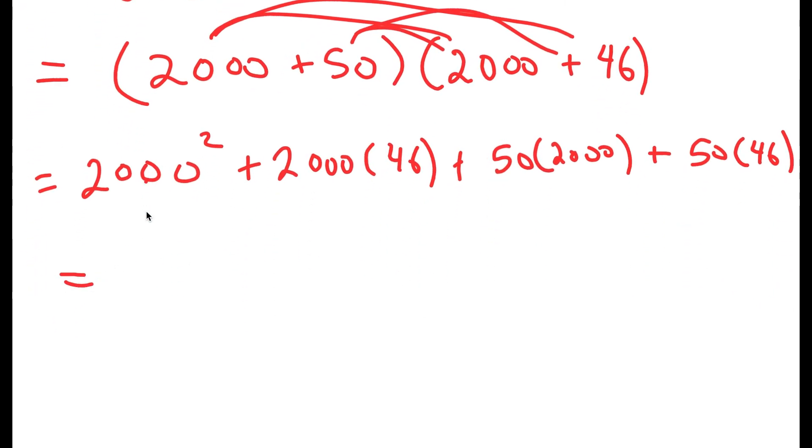Now, 2000 squared is equal to 4 million. So I get 4 million plus 2000 times 46 is 92,000 plus 50 times 2000 is 100,000 plus 50 times 46 is 2300.